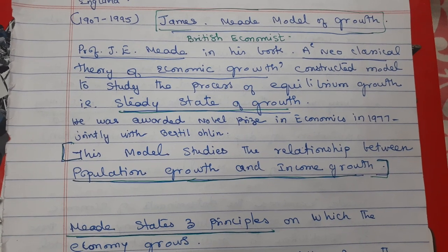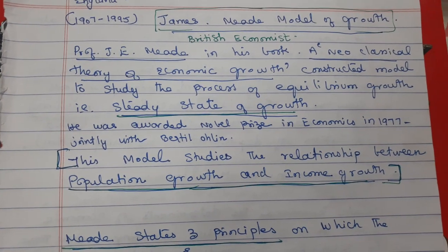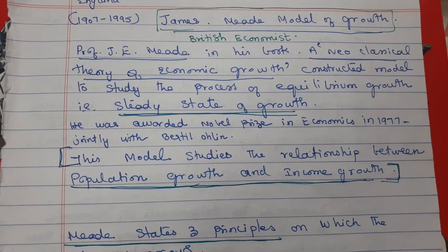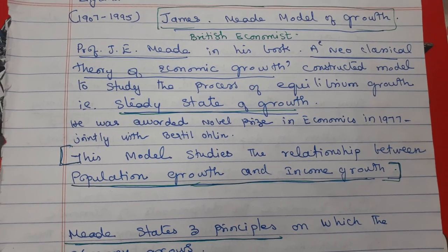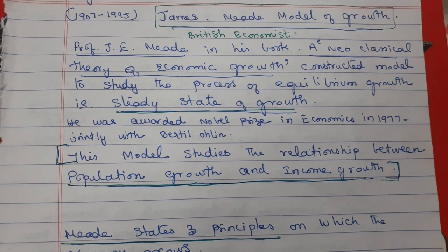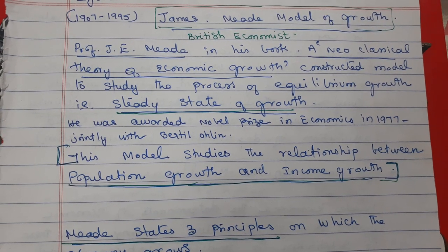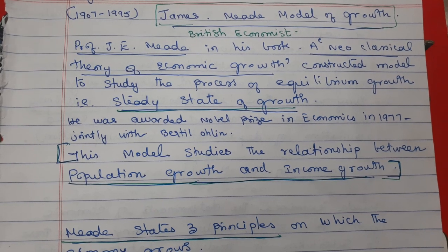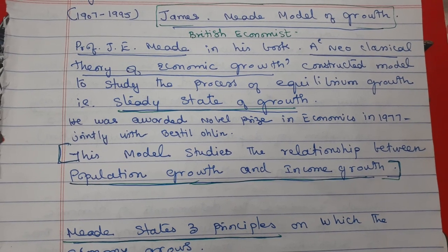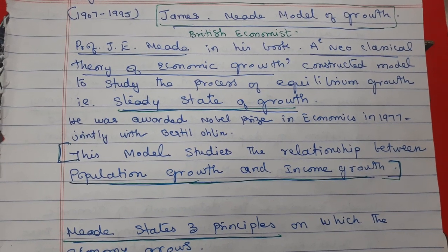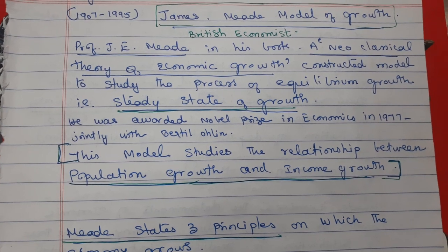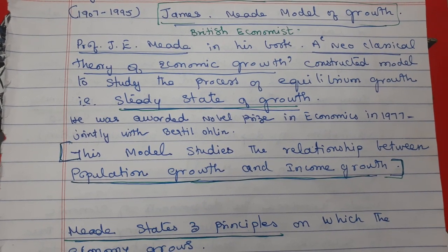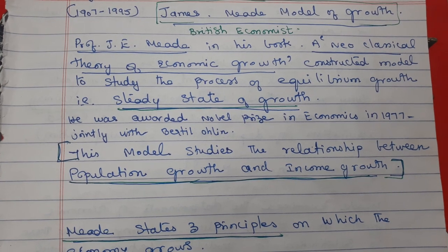Professor J.E. Meade, in his book A Neoclassical Theory of Economic Growth, constructed a model to study the process of equilibrium growth, that is, the steady state of growth. He was awarded the Nobel Prize in Economics in 1977, jointly with Bertil Ohlin. Bertil Ohlin was the prominent brainchild for the Heckscher-Ohlin theorem in International Economics.